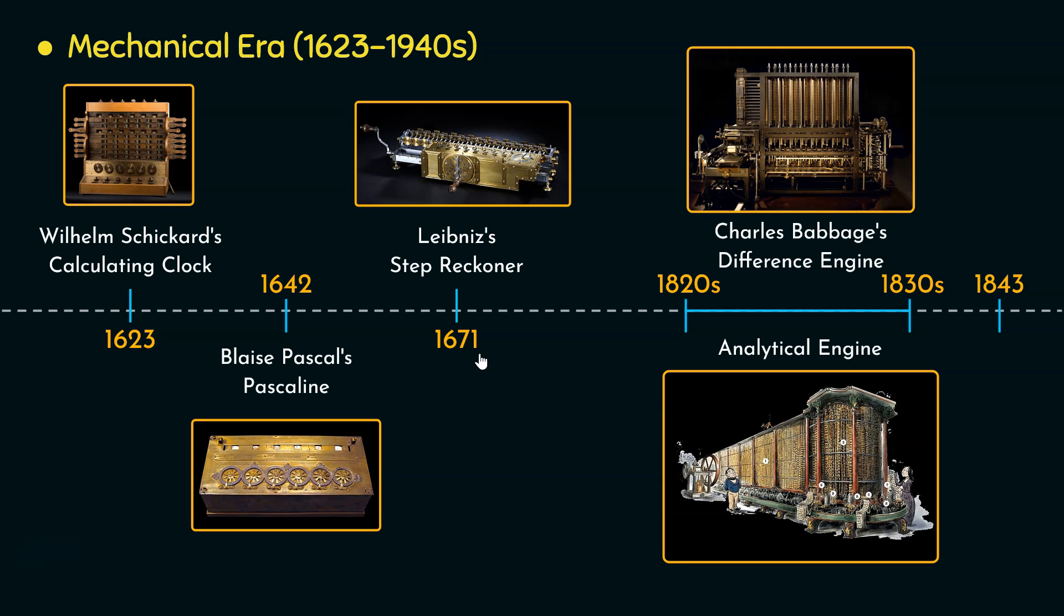After 1671, the golden age of the mechanical era was considered the decade of 1820s till 1830s. During this time period, Charles Babbage invented his difference engine. It consisted of a series of interconnected gears, levers, and axles which were used to calculate polynomial functions such as logarithmic and trigonometric tables by computing the finite differences between successive values.